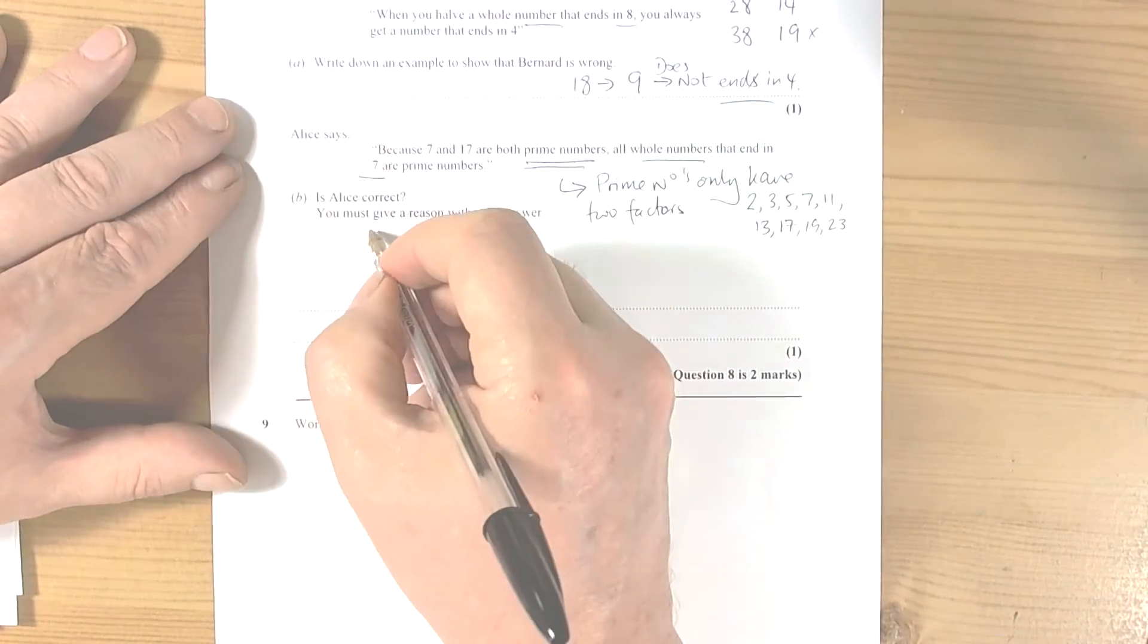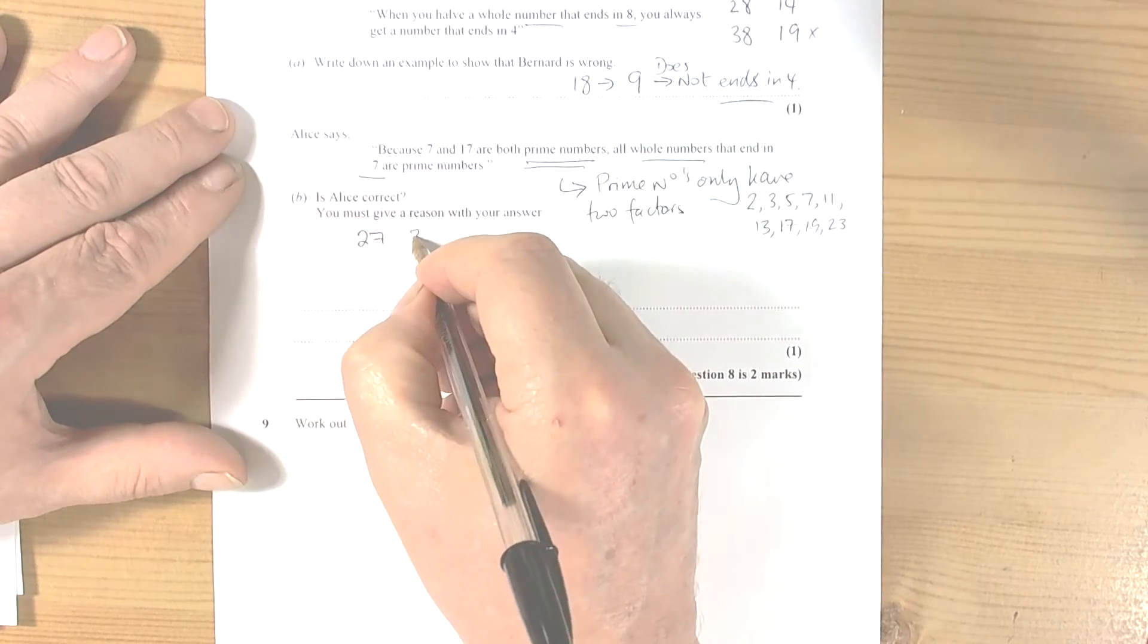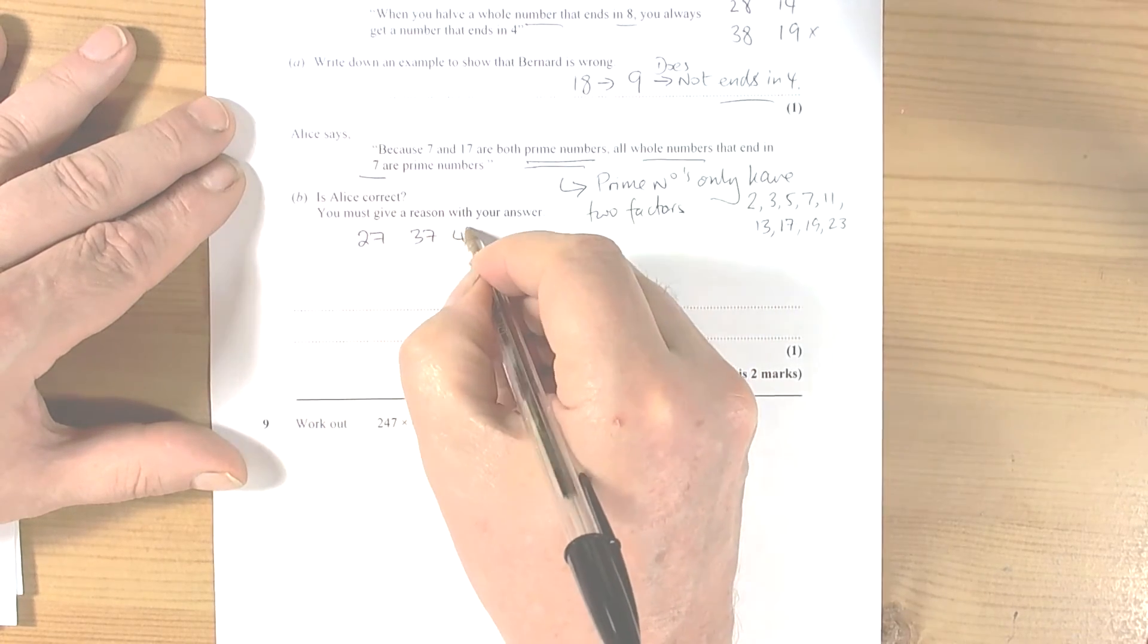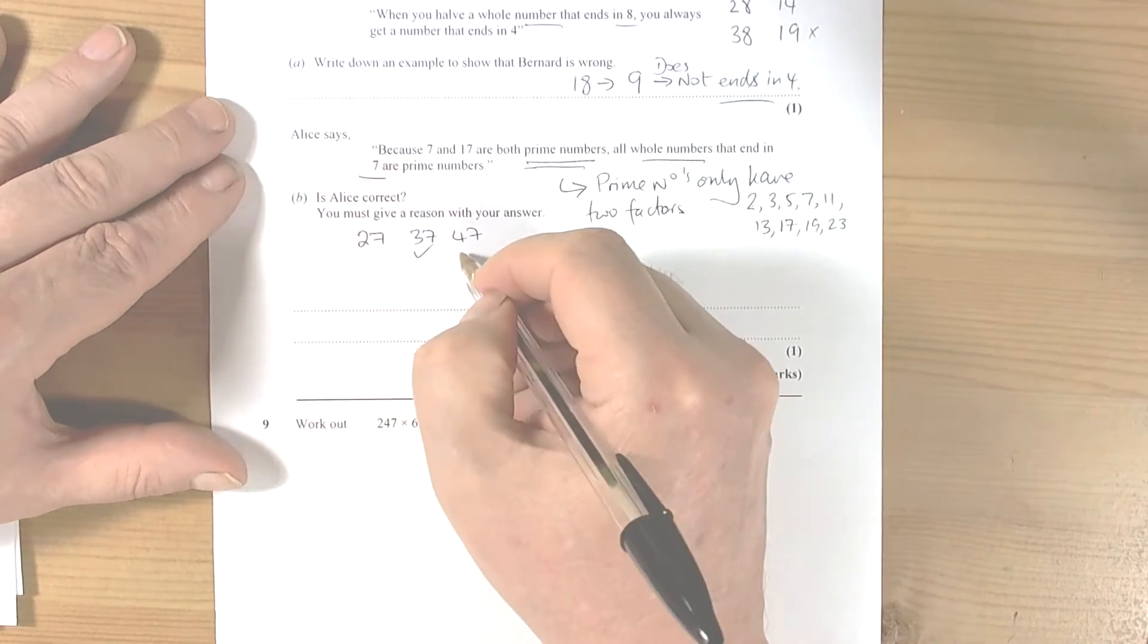So again, it's saying all whole numbers that end in seven. So let's write some down. Well, they've given us 7, 17, so the next one will be 27, the next one will be 37, the next one will be 47. Well yeah, those two are prime numbers.